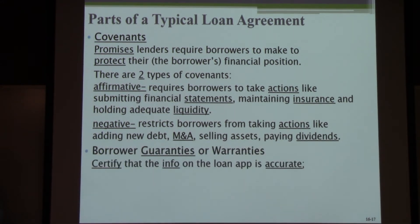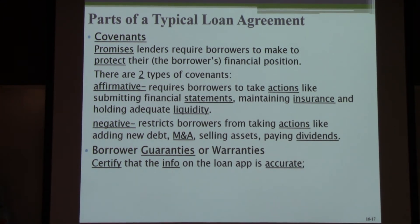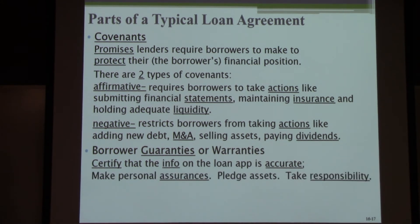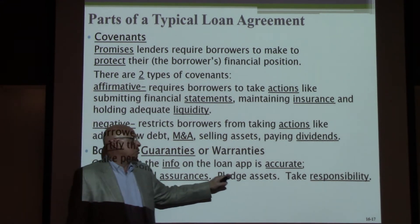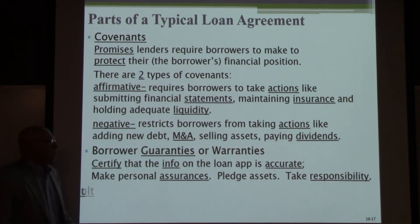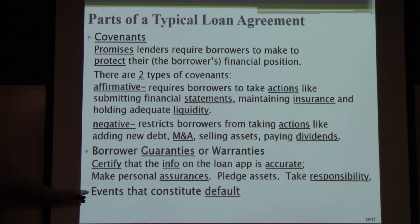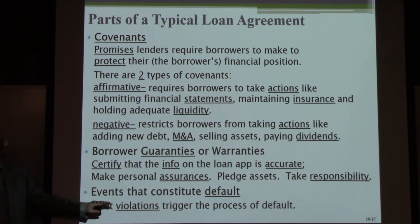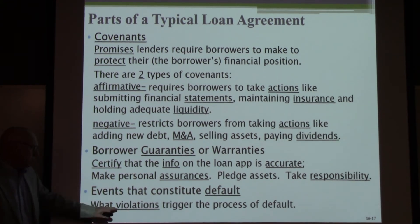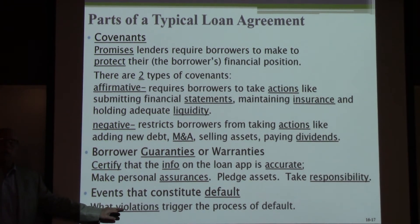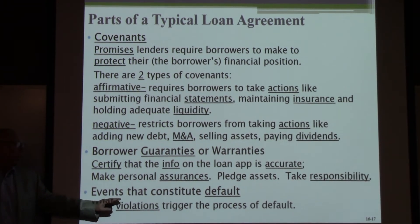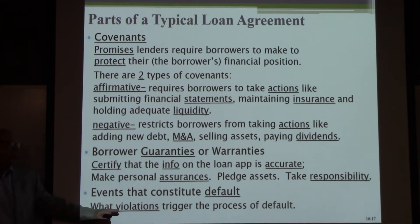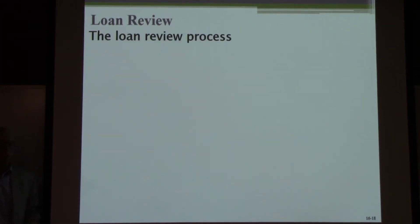Then there are borrower guarantees or warranties, one of which is to certify that information on the loan application is accurate — do not commit fraud. Then you make personal assurances like pledging personal assets. It's also laid out clearly what constitutes a default, what violations trigger the default process. It's very important for a borrower to understand this so that nothing surprising happens — you don't want to be caught off guard.